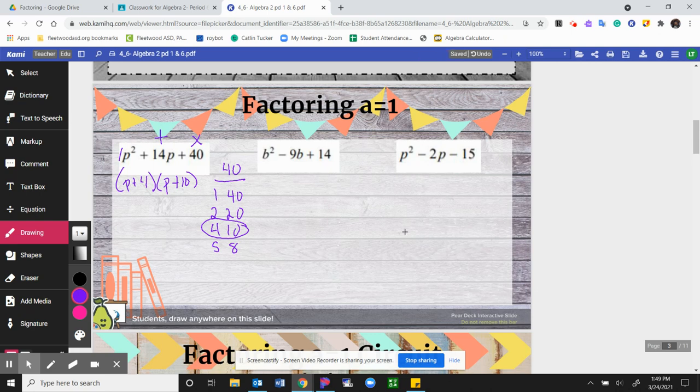Same thing for the next one here, I need two numbers that multiply to get 14, add to get a negative 9, don't forget that negative part. So again, if I go and make my list for 14, I have 1 and 14, 2 and 7, okay, 3, 4, 5, or 6 does not go into 14, so that's my list.